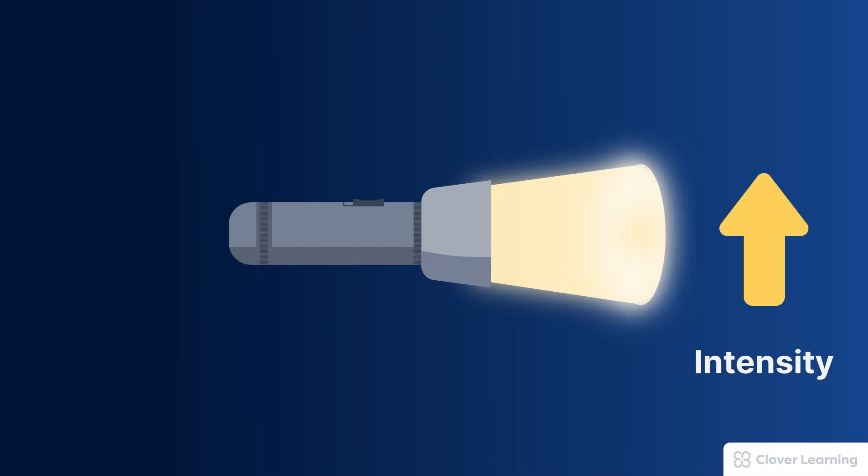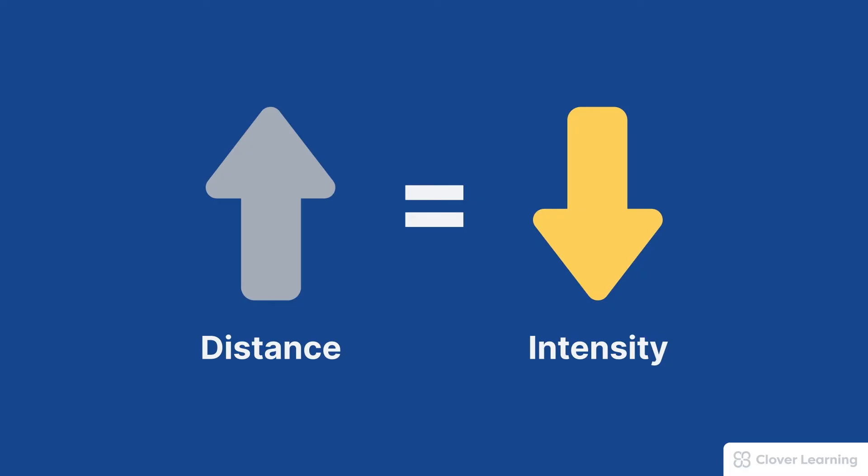Here's what that relationship looks like: when the distance increases between the X-ray tube and the point of measurement, this results in a decrease in the X-ray beam intensity. The opposite is also true—if the distance decreases between the X-ray tube and the point of interest, then the X-ray beam intensity or quantity will increase.